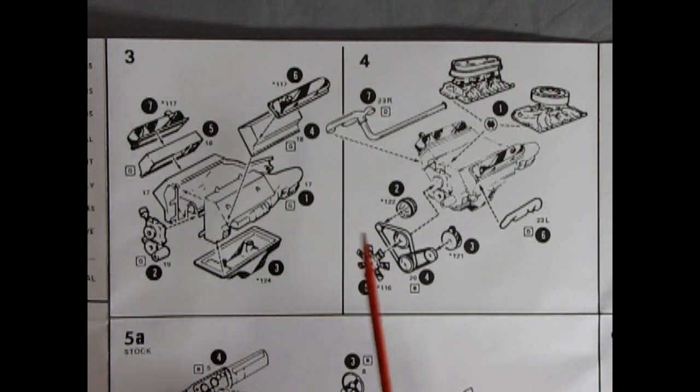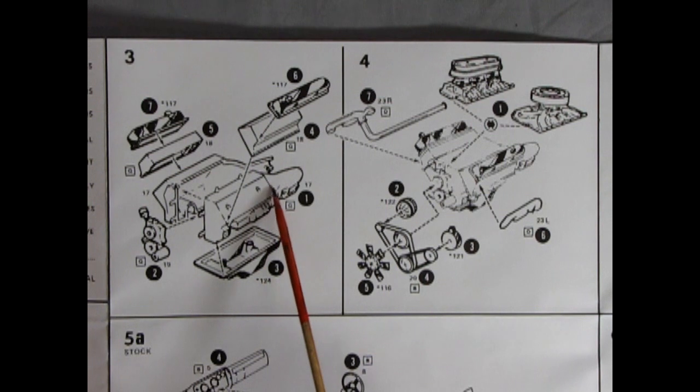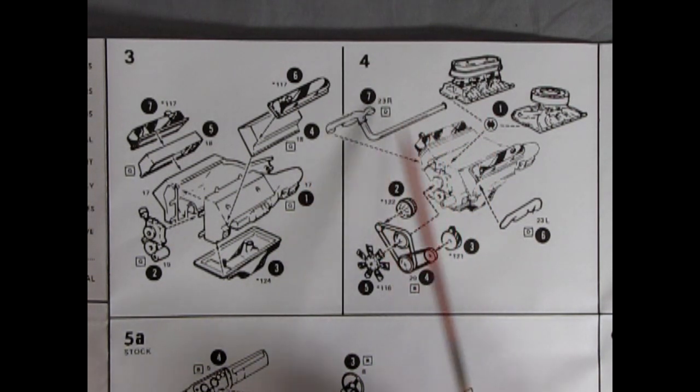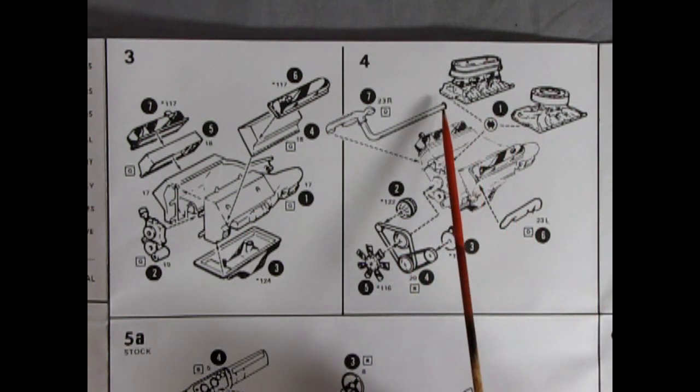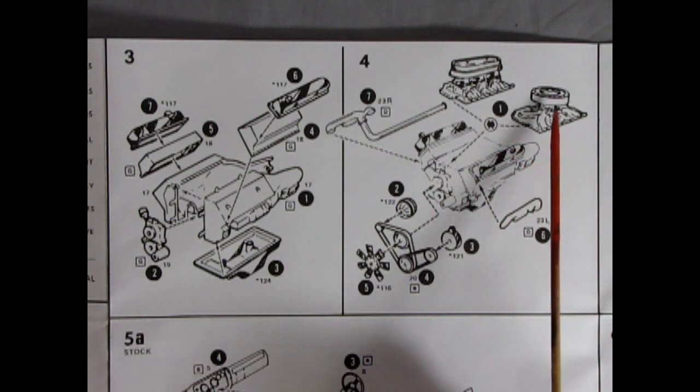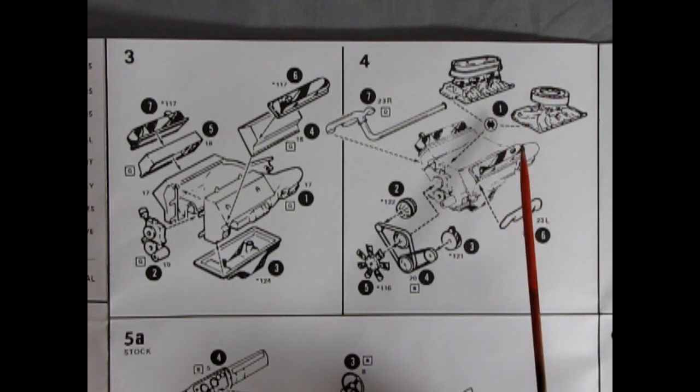Step three and four is the engine assembly. Here we have a left and right engine block with the transmission molded in place, cylinder heads, valve covers, oil pan, front engine cover and then into step four we have the exhaust manifolds left and right as well as our alternator, power steering pump, belts and fan and then your option of the 1971 446 pack or the 1974 air cleaner four-barrel carburetor.